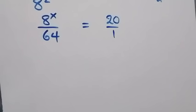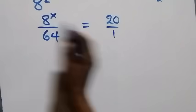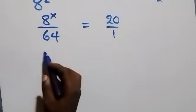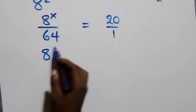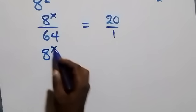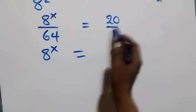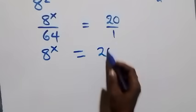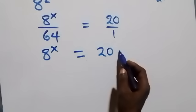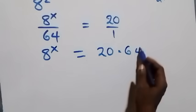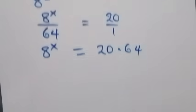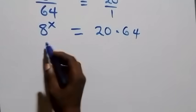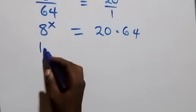At this step we cross multiply. We have 8 raised to power x times 1, that is 8 raised to power x, equals 20 times 64. From here we take the log on both sides.